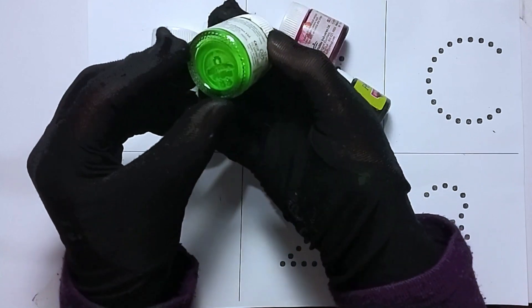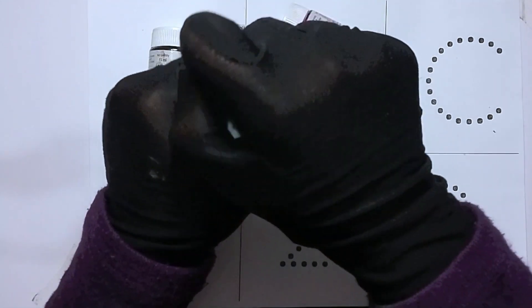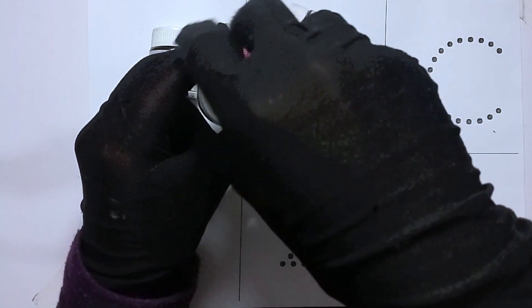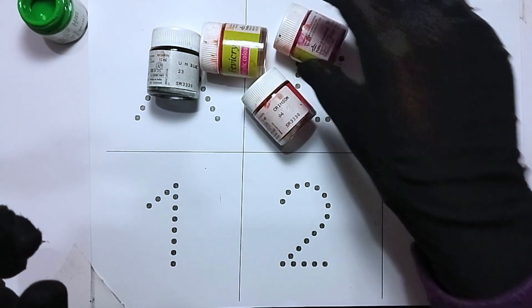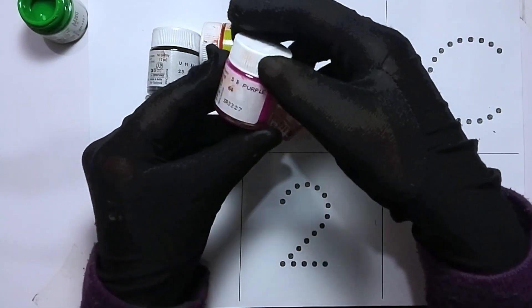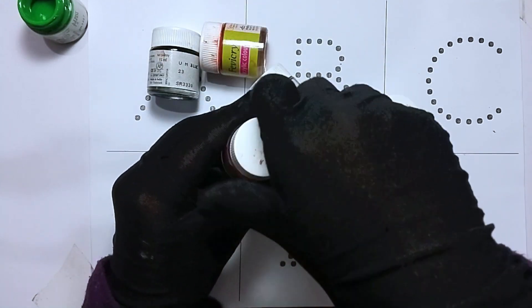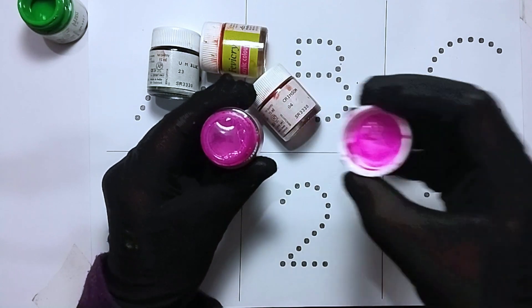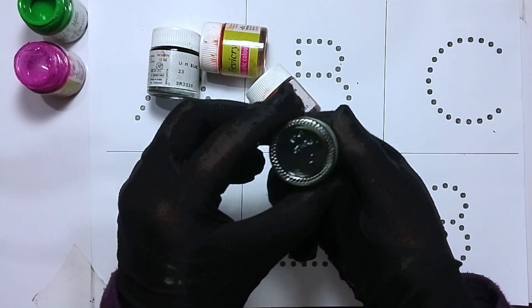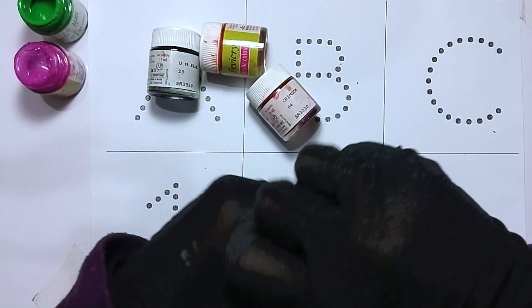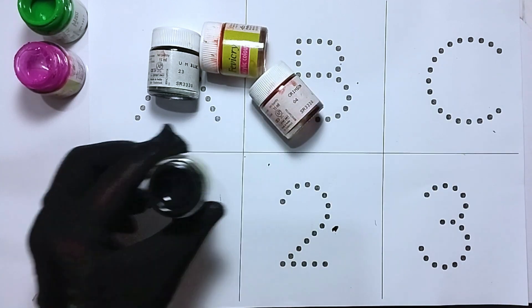This is our light green color. Whose color is it? This is the light green color. This is the purple color. Whose color is it? This is the purple color. This is the black color.